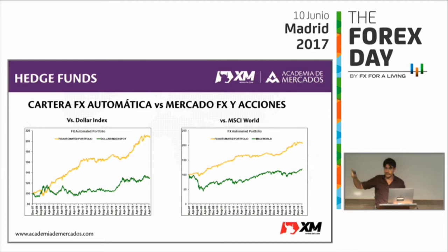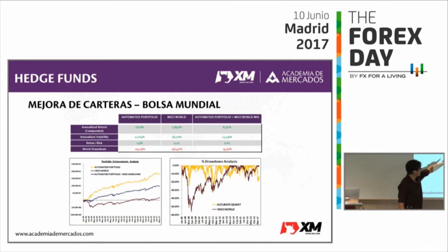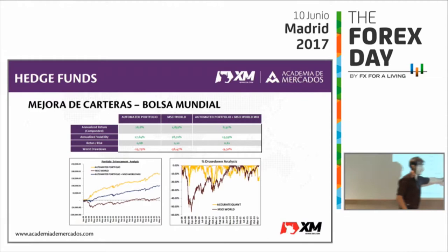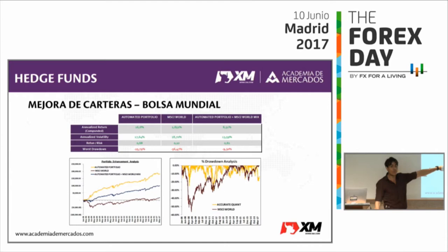Aquí tenemos otro ejemplo de mejora de carteras con números. La cartera amarilla es la de trading automatizado, la línea roja es la bolsa mundial. La cartera de trading sistematizado tiene una mayor caída de un 25,79%. Esto es un track record real aplicado sobre 500 millones de euros desde 2008 hasta aquí; el backtesting es desde 2000 hasta el 2006. La mayor caída de la bolsa mundial en 2008 es un 56%, pero mi cartera uniendo los dos es solo un 9% de mayor caída, porque cuando uno está perdiendo el otro está ganando.